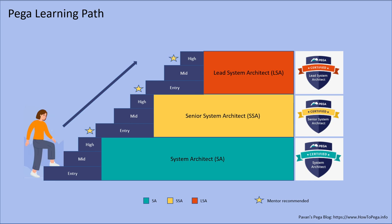Broadly within PEGA we have three roles known as system architect, senior system architect, and lead system architect. These are the well-defined roles. If you want more information, I strongly recommend you visit the PEGA PDN website. If you have limited time and would like to get the gist of what it takes to start from a system architect and eventually become a lead system architect, this video can help you get up to speed.